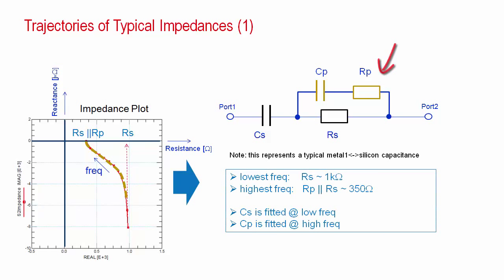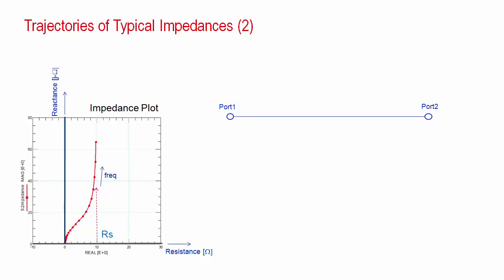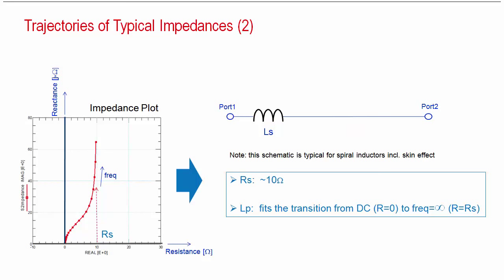The second example covers the typical impedance of on-wafer inductors. An ideal inductor alone would result in a straight line trajectory from zero to imaginary infinite. A series resistor would shift the trajectory to the right. And a trajectory shifting between the two previous scenarios means a frequency-dependent series resistor. The SPICE circuit for this example, typical for inductor with the skin effect, is shown here.